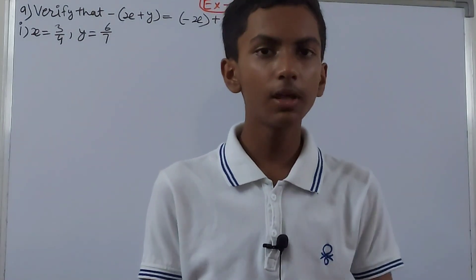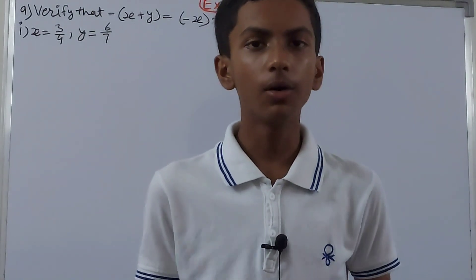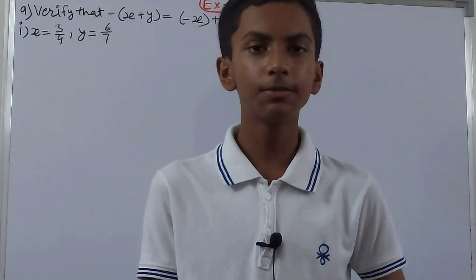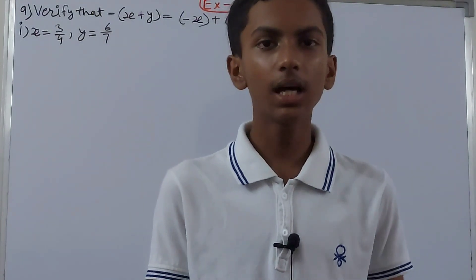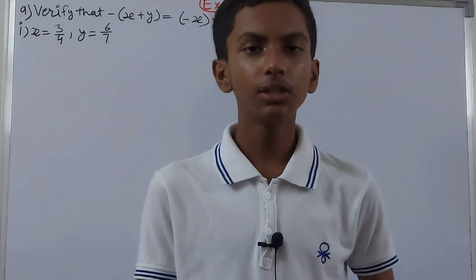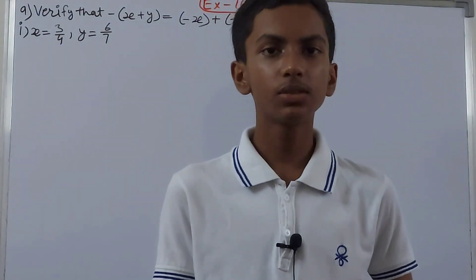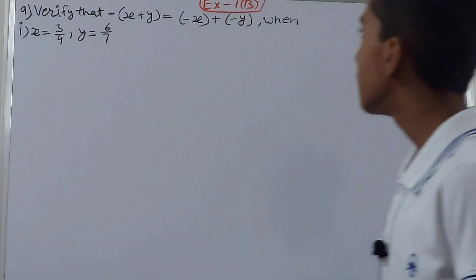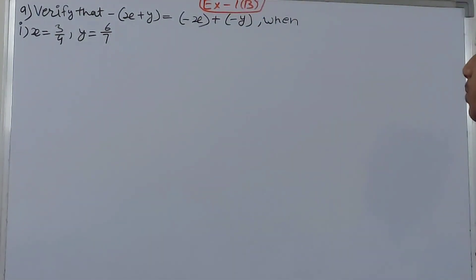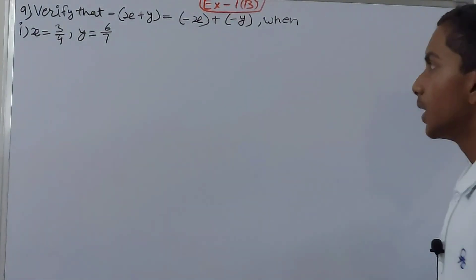Hello friends, welcome back to my YouTube channel Lock Your Learning. In this video we are going to solve ICSE Mathematics Class 8, Chapter 1 Rational Numbers, Exercise 1B, Question 9. It says: verify that minus of (x plus y) is equal to minus x plus minus y, where the values of x and y are given.